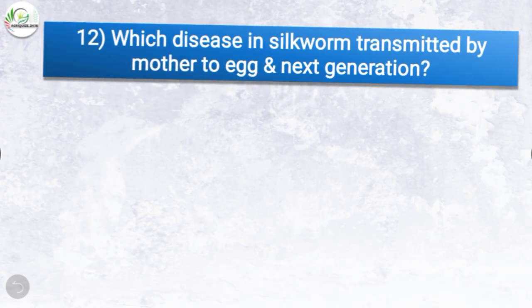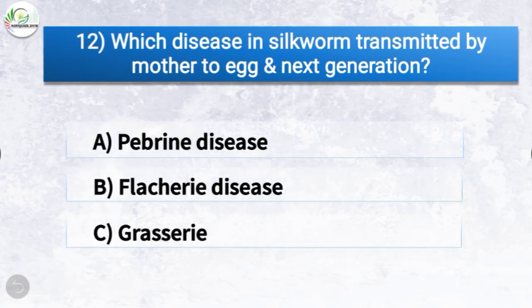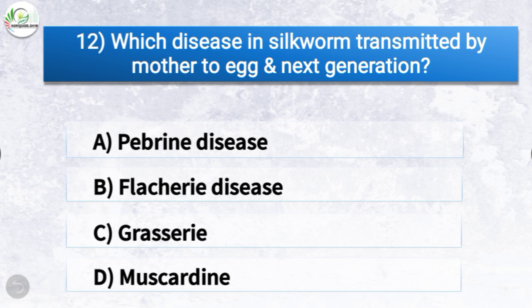Question number twelve: which disease in silkworm is transmitted by mother to egg and next generation? The options are pebrine disease, flacherie disease, grasserie disease, or muscardine. The correct answer is option A, pebrine disease. So pebrine disease in silkworm is transmitted by mother to egg and next generation.